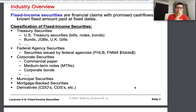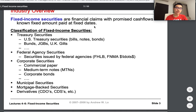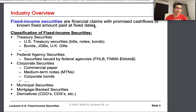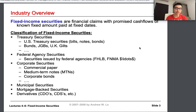Let's start with the industry overview of fixed income securities. The official definition is that they are financial claims — promised cash flows of a fixed amount paid at fixed dates. Unlike stock market investments where you get risky returns, fixed income securities pay a fixed amount of return. When we classify fixed income securities, there are a few familiar categories.